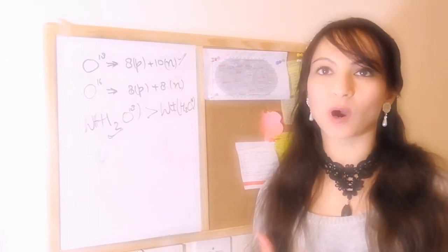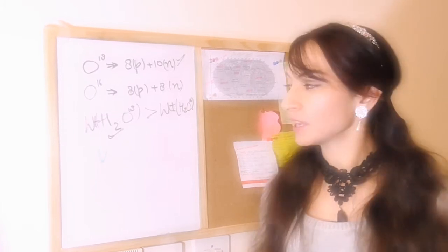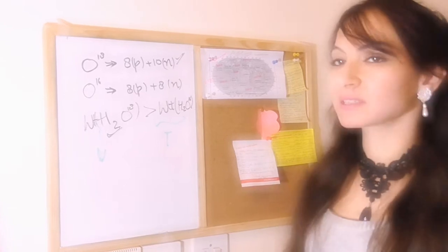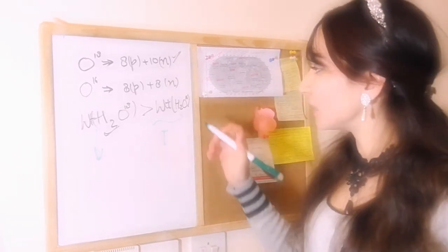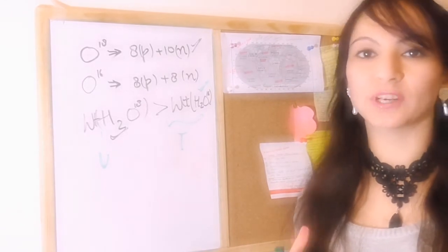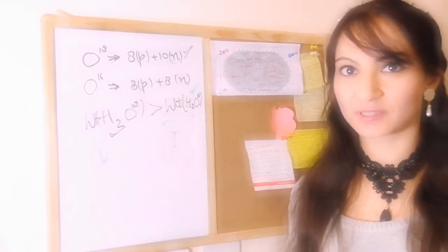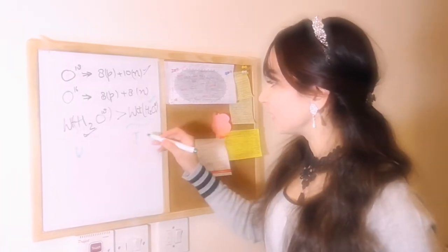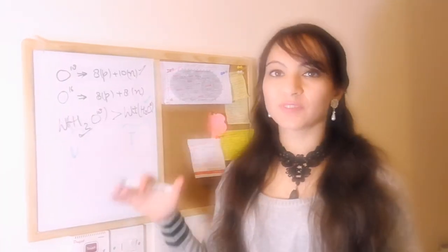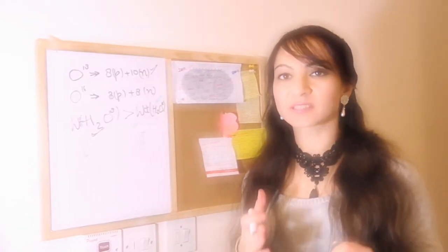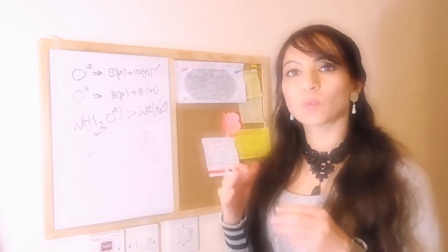So if at a particular temperature there is evaporation happening, there is more tendency of H2O-16 to evaporate and go into condensation form, into clouds, rather than H2O-18. So what it means is in the clouds we will have more H2O-16 components than H2O-18. Now when these clouds...